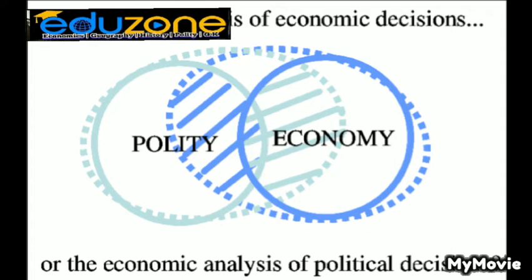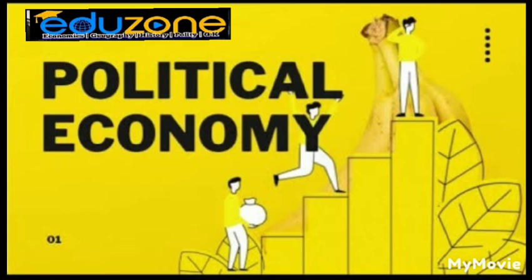International political economy studies problems that arise from or are affected by the interaction of international politics, international economics, and different social systems — for example, capitalism and socialism — and societal groups like farmers at the local level, different ethnic groups in a country, immigrants in a region such as the European Union, and the poor who exist transnationally in all countries.